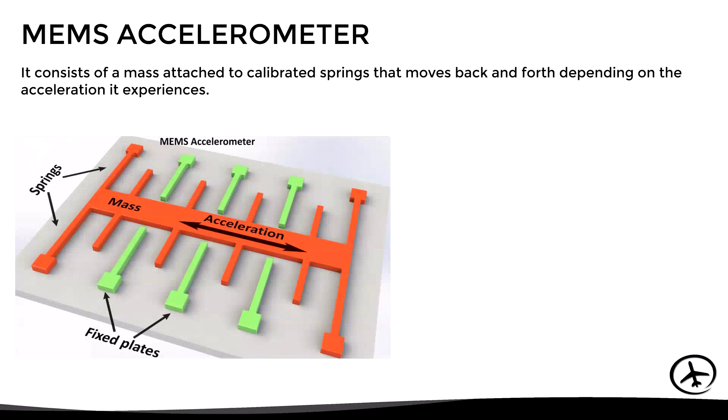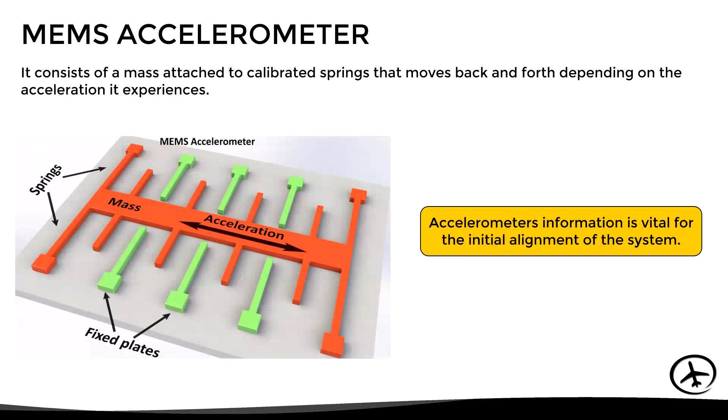The information from the accelerometers is vital for the initial alignment of the system, since they can detect the direction of gravity and use it as a reference to establish the position of the horizon. Apart from this, accelerometers are also useful for measuring changes in the attitude of the aircraft in terms of pitch and bank.